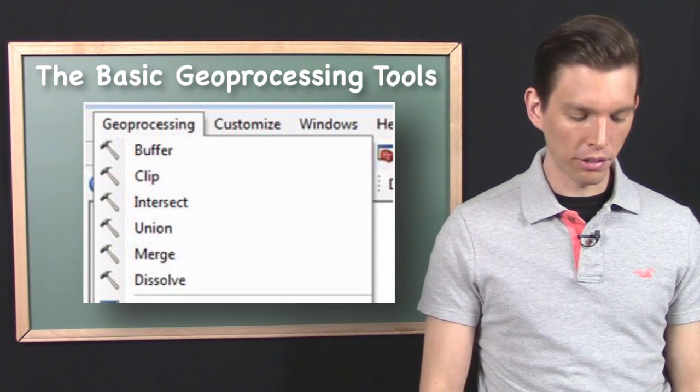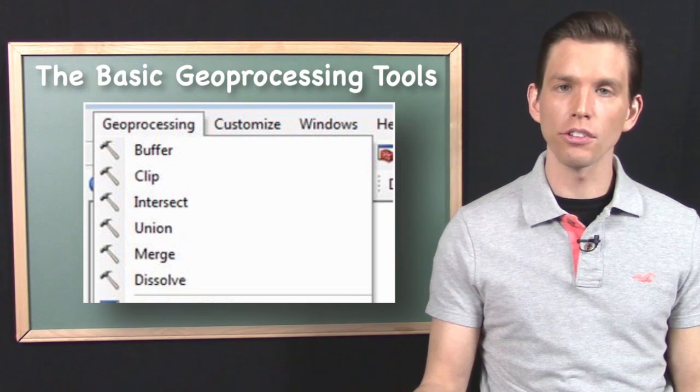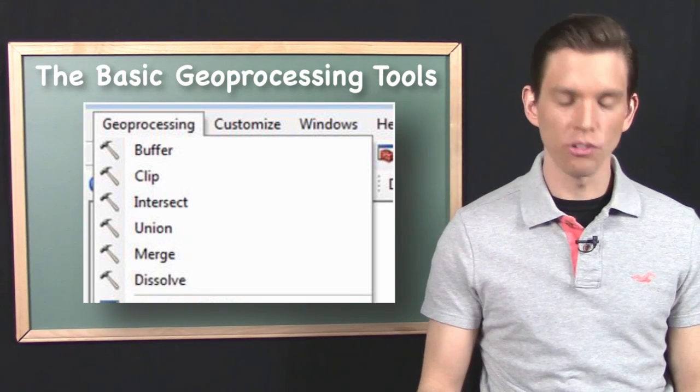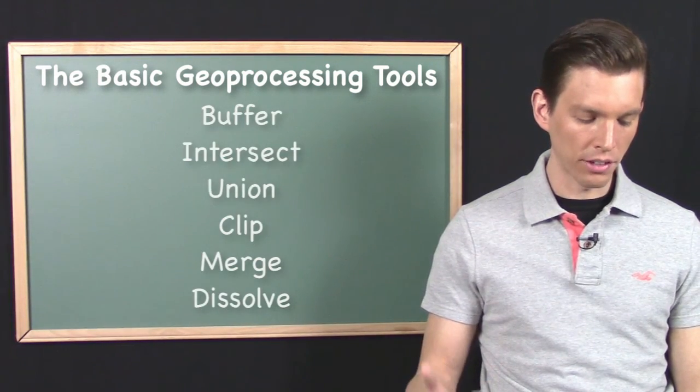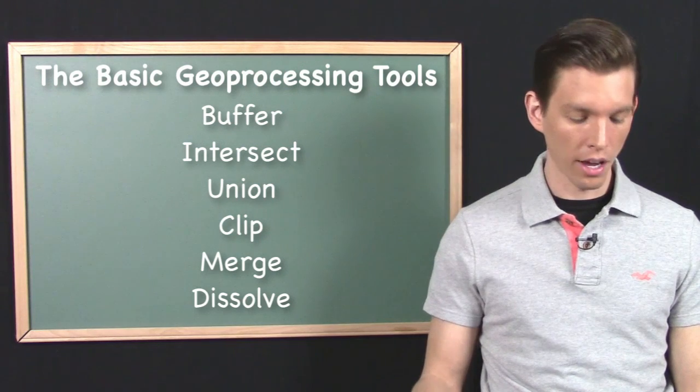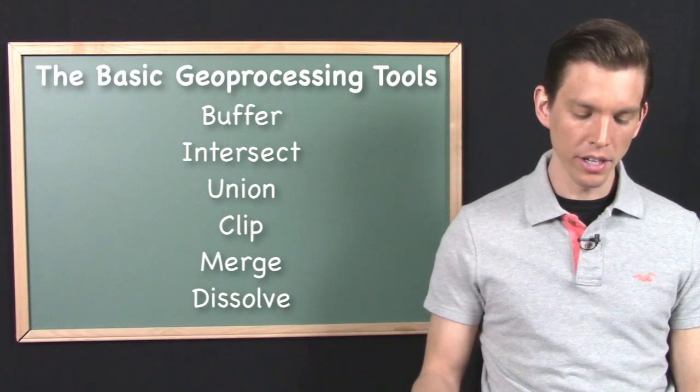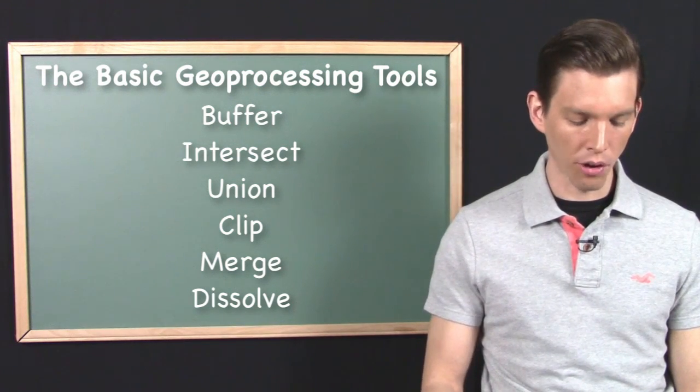So what are the basic six geoprocessing tools? Let me go ahead and list them here, but then I'll go over each one of them in more detail. So they are buffer, intersect, union, clip, merge, and dissolve.